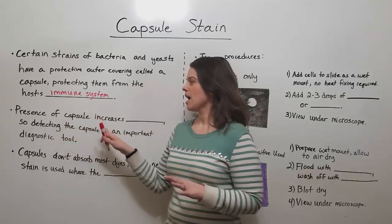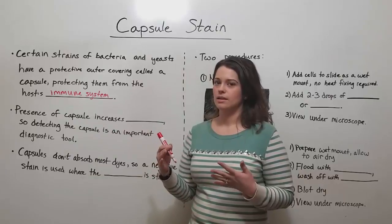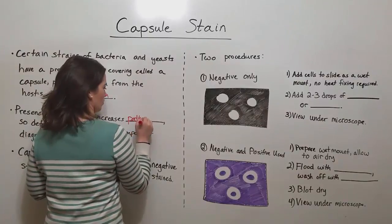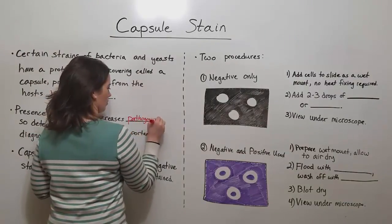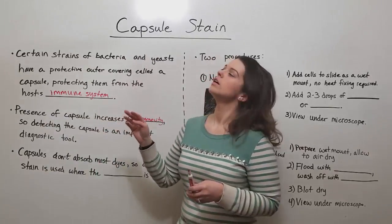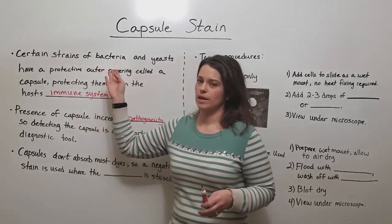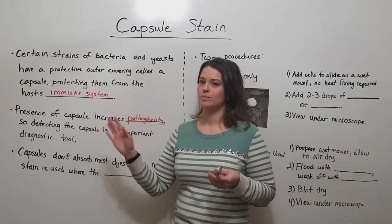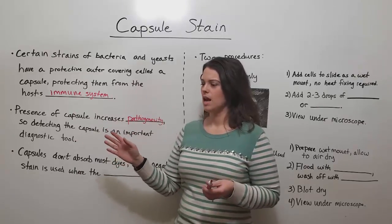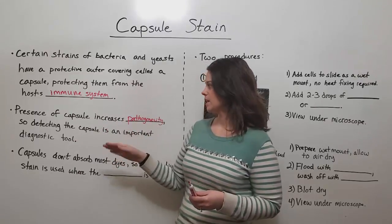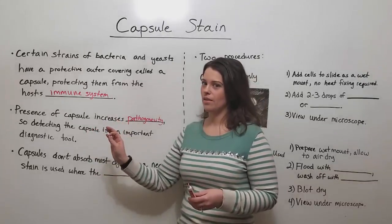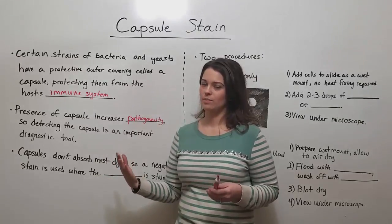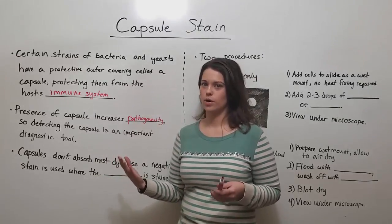The presence of a capsule increases the pathogen's pathogenicity. If you have two different strains of the same species of bacterium and one strain can produce a capsule and the other one can't, the one that can produce a capsule is much more dangerous and can also require different types of antibiotics. So detecting whether or not the pathogen produces that capsule is an important diagnostic tool that helps doctors decide the best course of action for their infected patients.